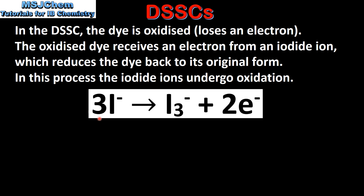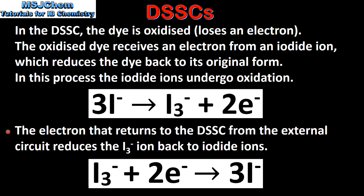In this equation we have the oxidation of iodide ions to form the triiodide ion and two electrons. These electrons reduce the oxidized dye back to its original form. The electron that returns to the DSSC from the external circuit reduces the triiodide ion back to iodide ions. In this equation we can see the reduction of the triiodide ion to form iodide ions. The iodide ions can then be oxidized to form triiodide ions and electrons.